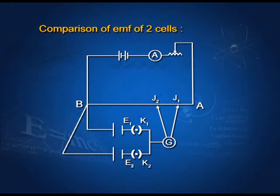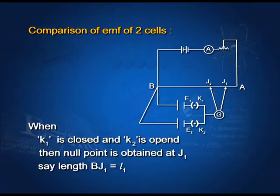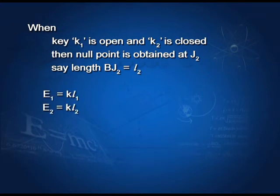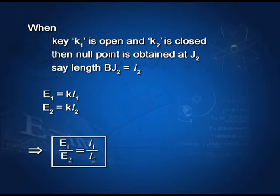Comparison of EMF of two cells: two cells of EMF E1 and E2 are connected at point B as shown in the diagram. Always remember, all the positive terminals of all the cells are connected at the same point. When key K1 is closed and K2 is open, the null point is obtained at J1, with length BJ1 = L1. When K1 is open and K2 is closed, the null point is obtained at J2, with length BJ2 = L2. So E1 = KL1 and E2 = KL2, therefore E1/E2 = L1/L2.